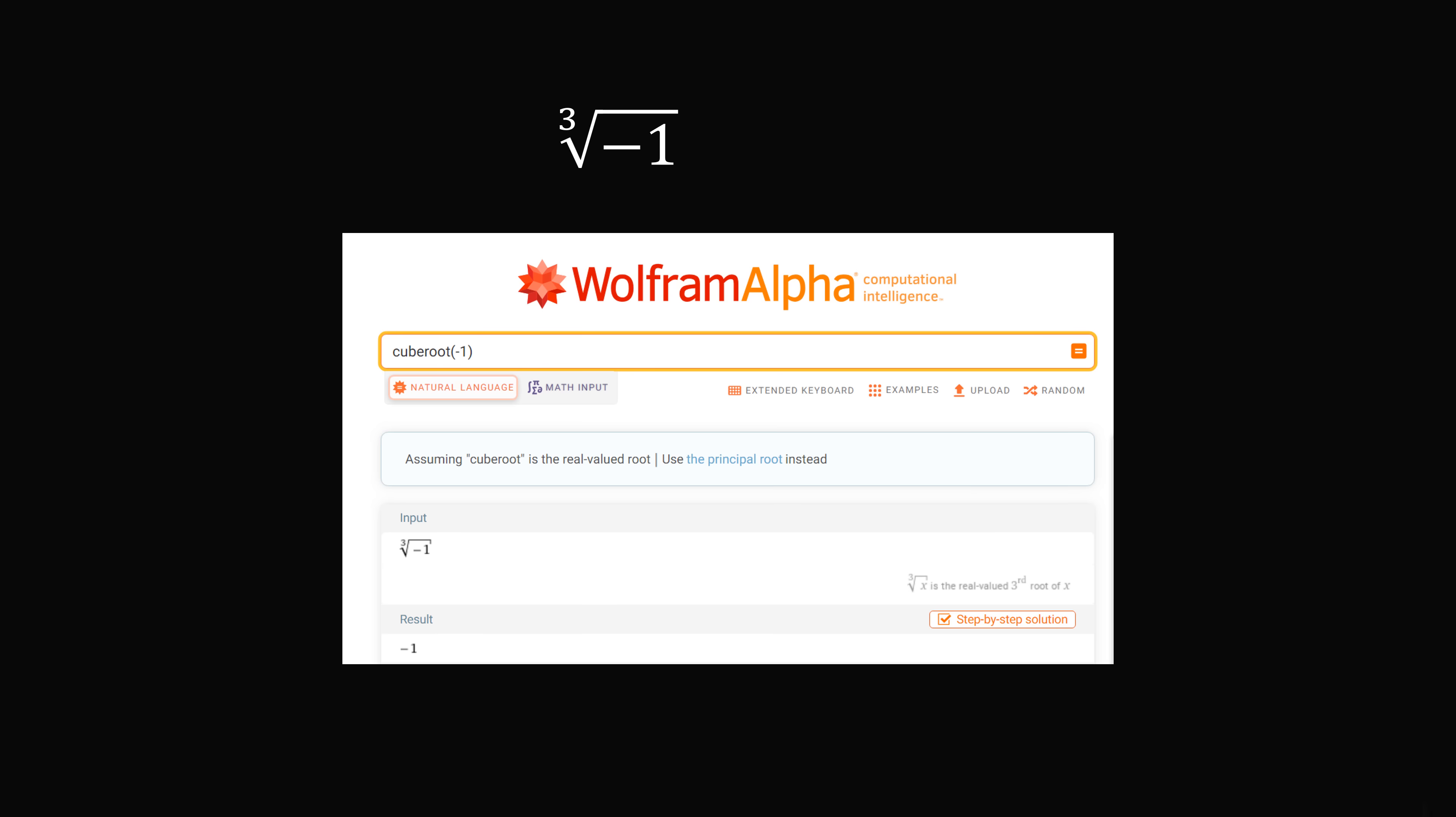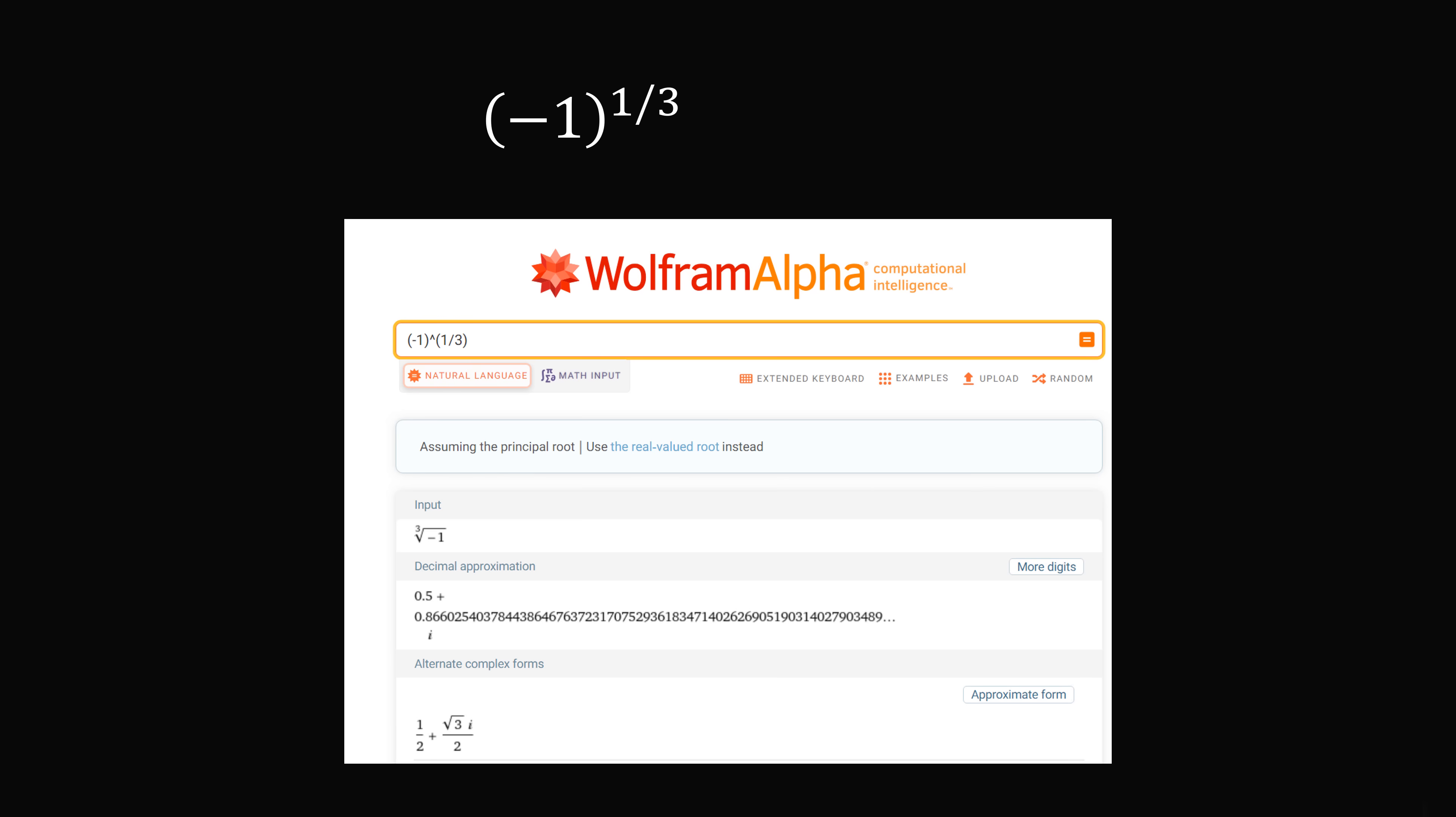So one day you're playing around with Wolfram Alpha and you wonder what's the cube root of negative 1? You type that in and you get the result of negative 1. No problem here. But then you wonder what would happen if I type in negative 1 raised to the fractional exponent 1 over 3. So you think you would get the answer of negative 1, but instead you get something totally different.